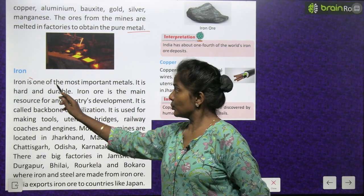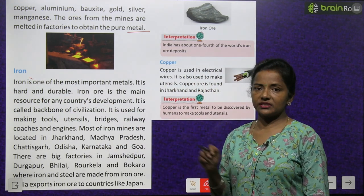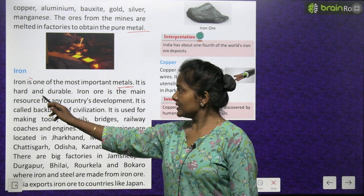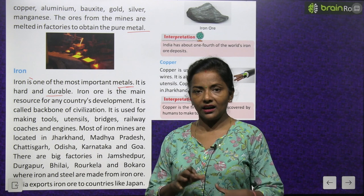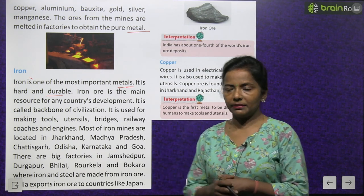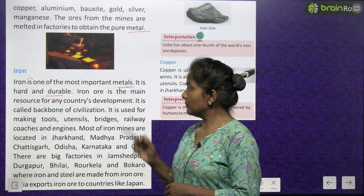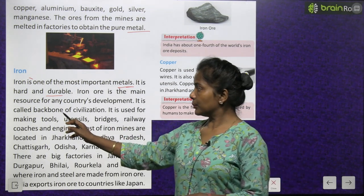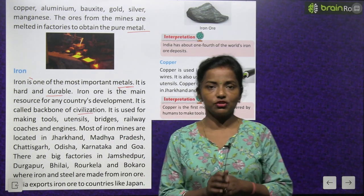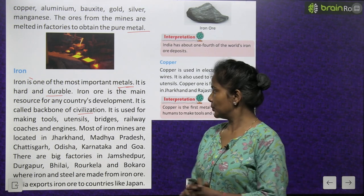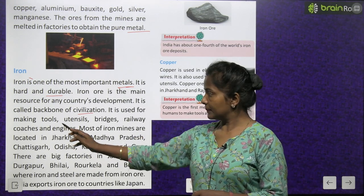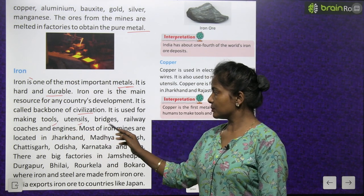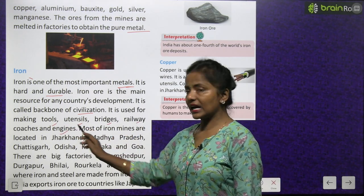Iron is one of the most important metals. It is hard and durable — ye hard bhi hai aur durable bhi hai. Iron ore is the main resource for any country's development. It is called the backbone of civilization. It is used for making tools, utensils, bridges, railway coaches and engines.